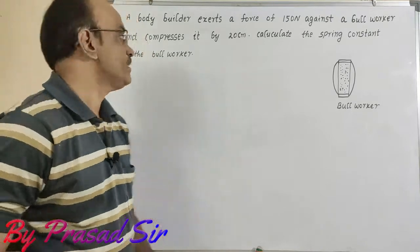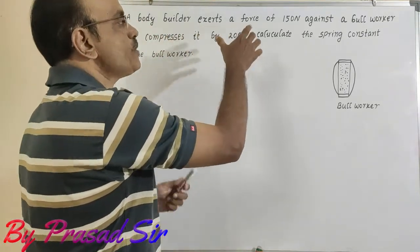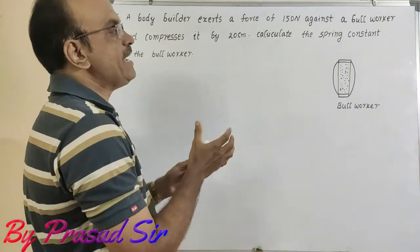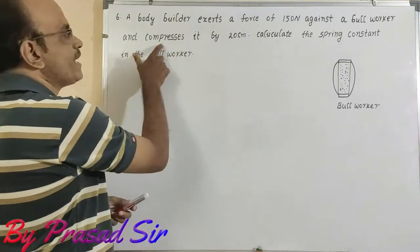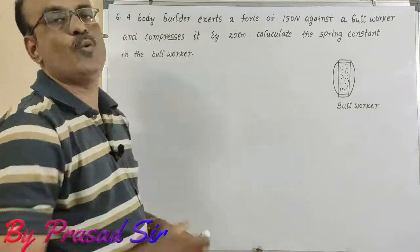Question number 6. A bodybuilder exerts a force of 150 newtons against a bulwarker and compresses it by 20 centimeters. Calculate the spring constant in the bulwarker.